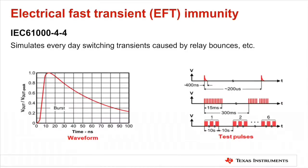IEC 61000-4-4 is the burst immunity, or electrical fast transient, test. Many manufacturers consider this test the most important, as it simulates everyday switching transients found in the industrial application space. It is performed on power, signal, and earth wires, or a subset depending on what is appropriate for the EUT. In this test, a burst generator produces a series of bursts lasting 15 milliseconds with a pulse rate of 5 kHz. The time between bursts is 300 milliseconds.